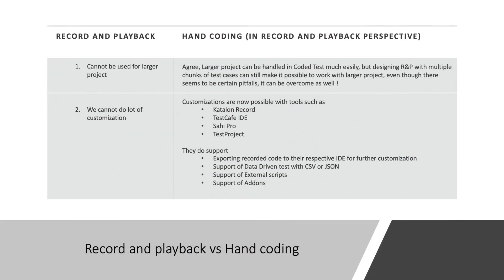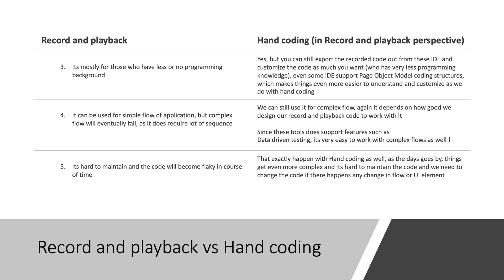These export options are available out of the box within these test recorders and are very handy for customization. For example, if there are some buttons clicked accidentally during recording, you can modify that in the exported code rather than the UI. Once you get the hang of that kind of coding, you can delete or modify the code and do a lot of customization. Record and playback also supports data-driven testing with CSV or JSON files, external scripts, and add-ons — as available in tools like Test Project.